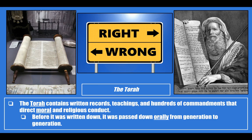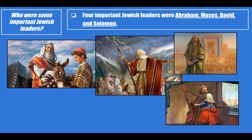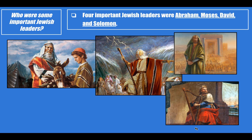The next question is: who are some important Jewish leaders? The four important Jewish leaders we're focusing on in this section are Abraham, Moses, David, and Solomon. The picture on the left is the story of Abraham and his son Isaac, which you'll see in the DBQ in this unit. Abraham's God asks him to sacrifice his son Isaac. The center shows Moses parting the Red Sea in the story of the Exodus. Down here, this is King David playing his harp. And then we have King Solomon in front of his temple.